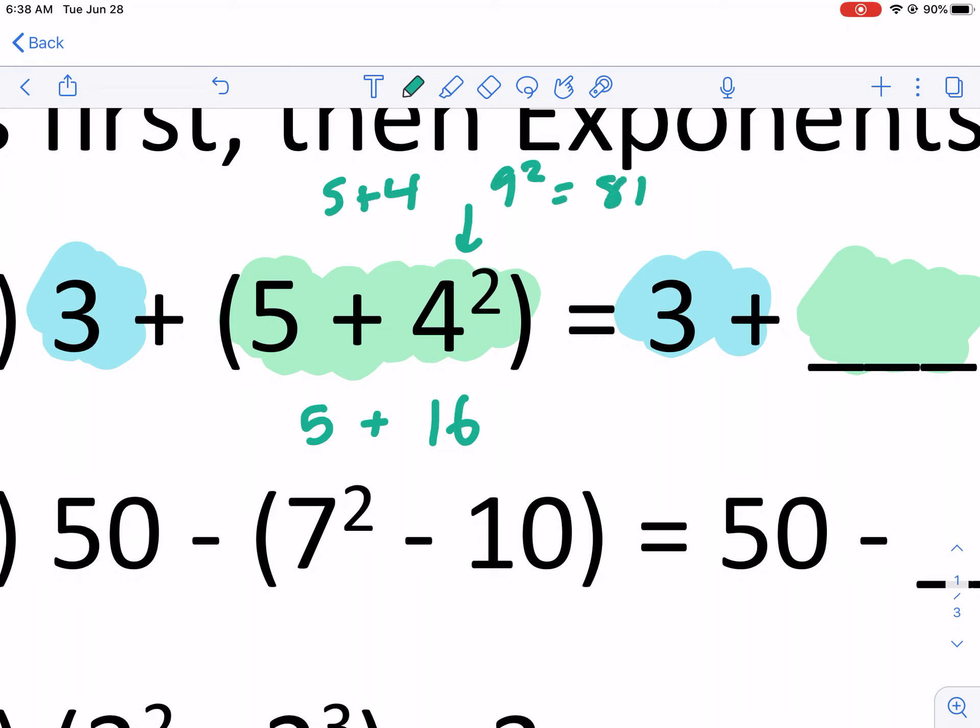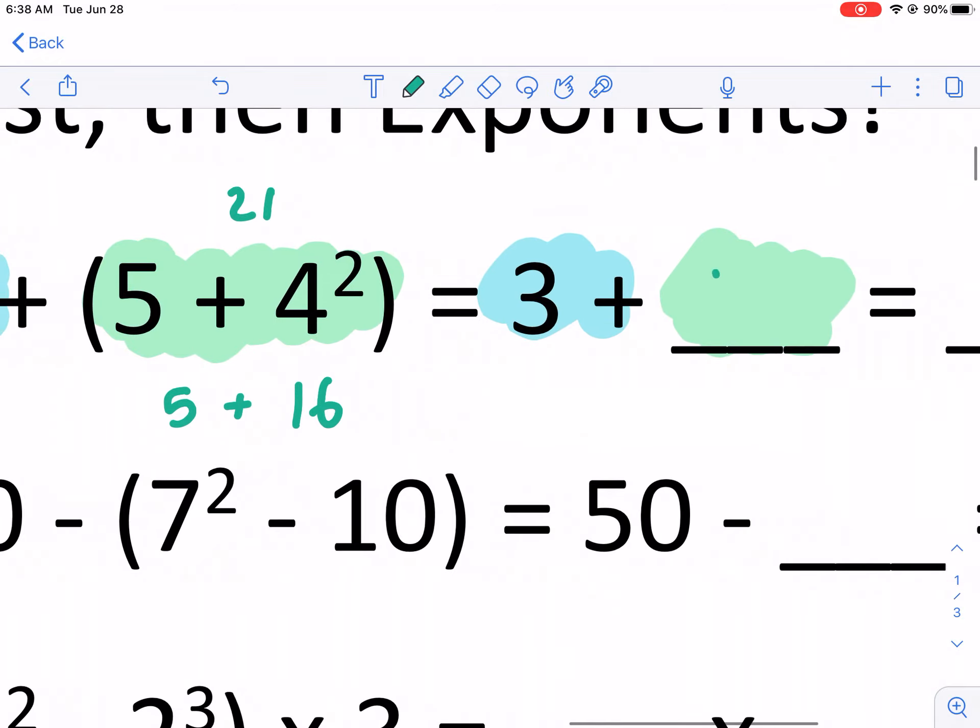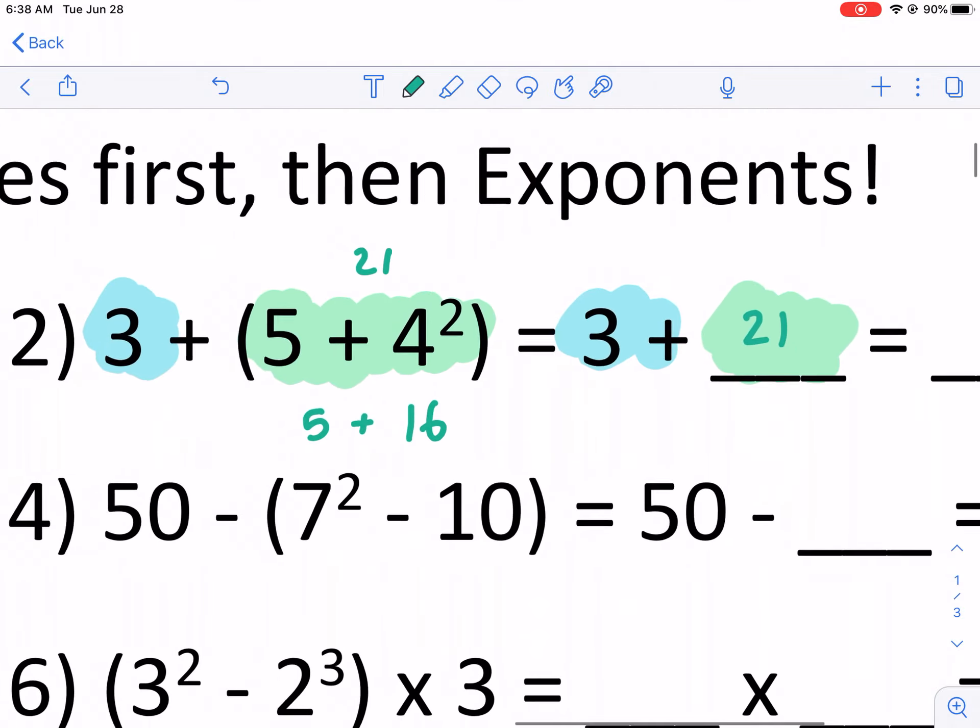Don't be that guy. So we have five plus 16. That gives us 21. I can go ahead and put it right in that blank right there.